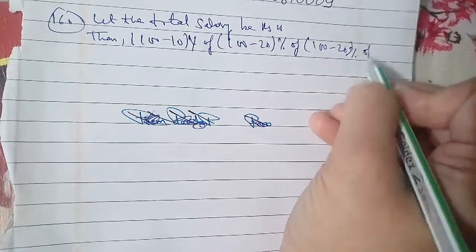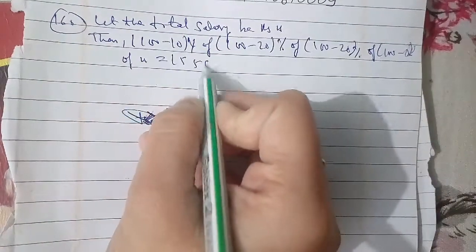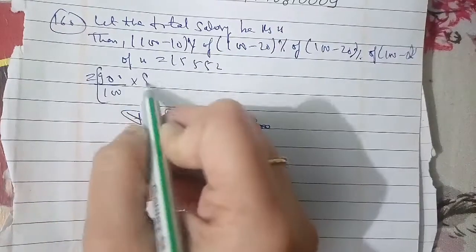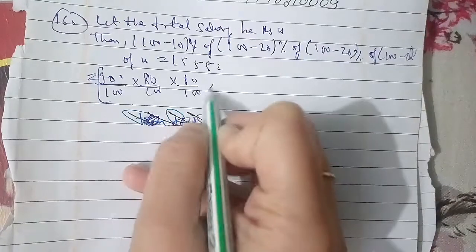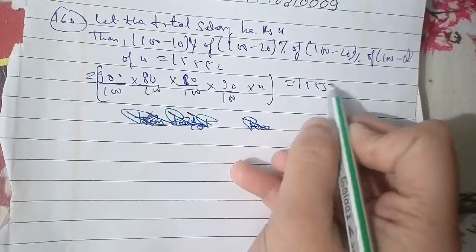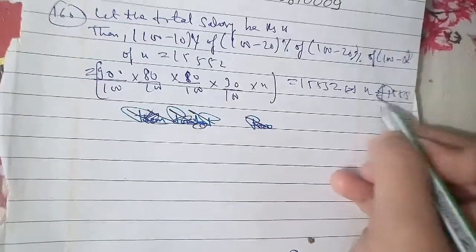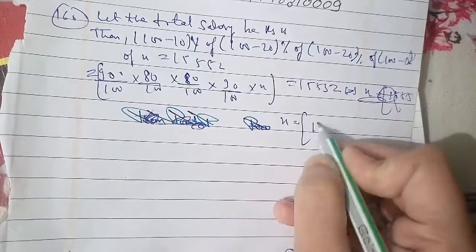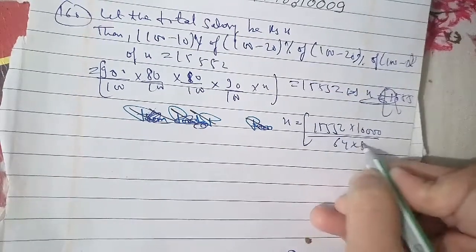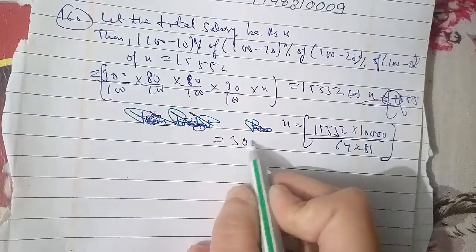Question 161: Aman gave 40% of the amount he had to Rohan. Rohan in turn gave one-fourth of what he received from Aman to Sahil. After paying rupees 100 to a taxi driver from the amount he got from Rohan, Sahil now has rupees 600 left. How much amount did Aman have? Options: rupees 4,000; 8,000; 12,000; or data inadequate. This was asked in bank exam question papers.